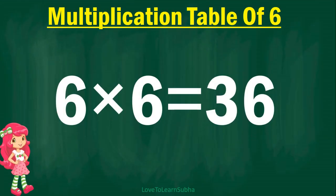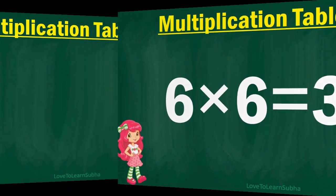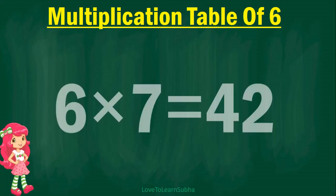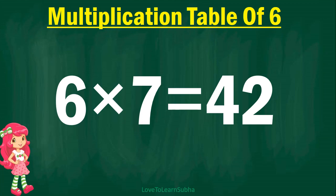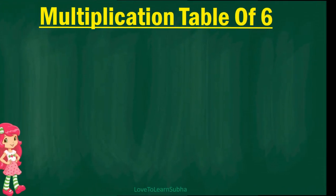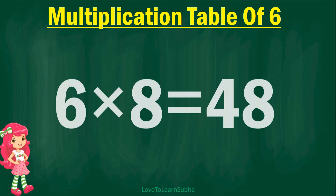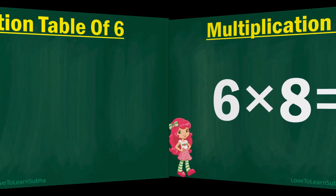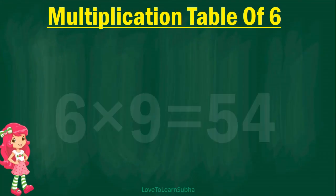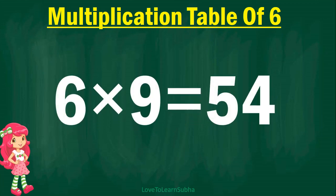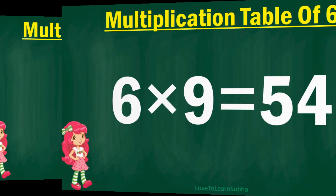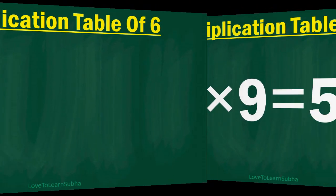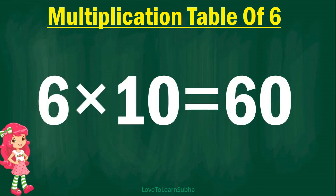6 6s are 36, 6 7s are 42, 6 8s are 48, 6 9s are 54, 6 10s are 60.